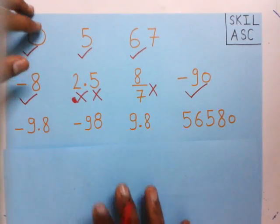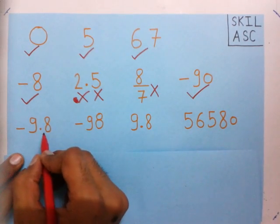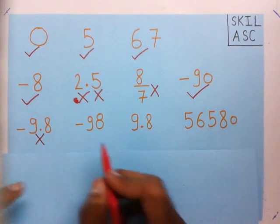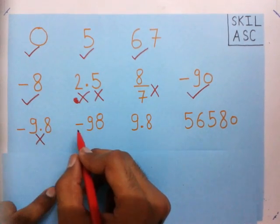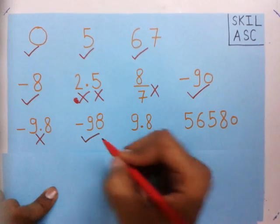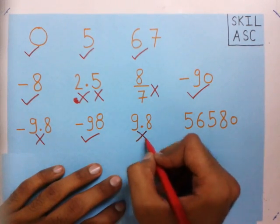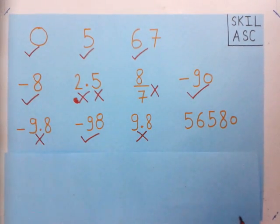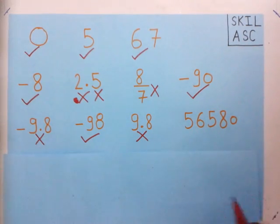Now we take one more example: minus 9.8. Since it has a decimal point in it, this is not an integer. Now you see minus 98. This is an integer, because 98 is a number used for counting and we have put a negative sign to it. Next, 9.8 — it has a decimal point, so it is not an integer. Now we see 56,580. This is a large number, but if you keep counting continuously you will find this number. So it is used while counting and it is an integer.